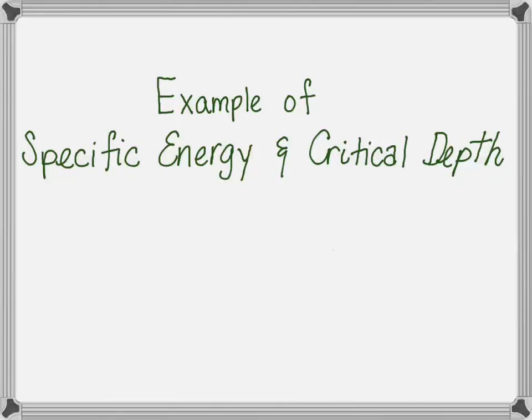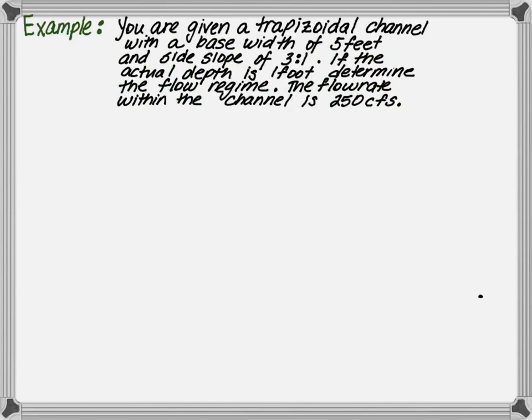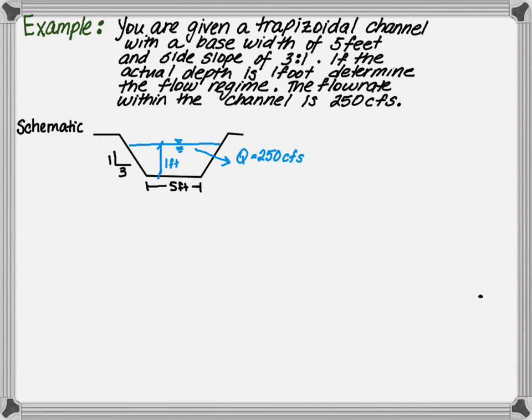This video covers examples on specific energy and critical depth. You are given a trapezoidal channel with a base width of 5 feet, side slopes of 3 to 1. If the actual depth is 1 foot and the flow rate is 250 CFS, determine the flow regime.